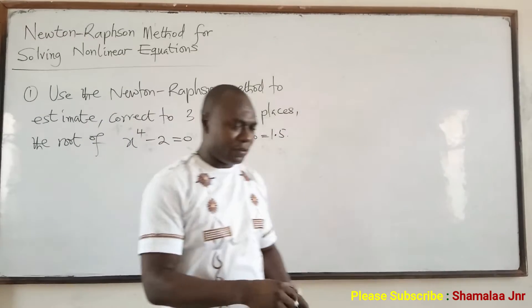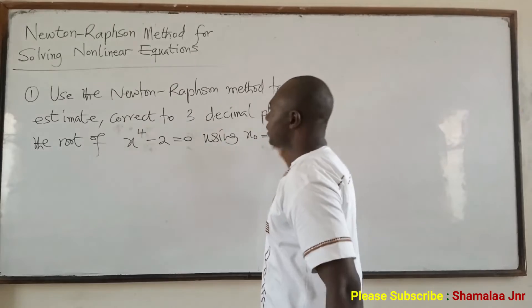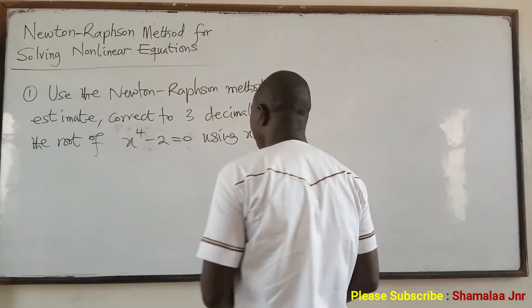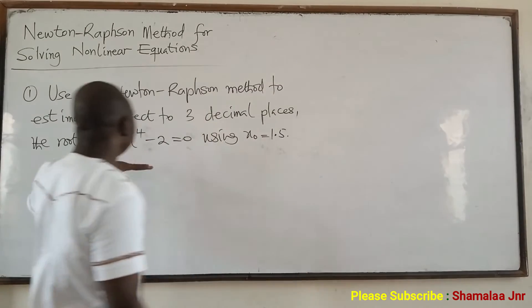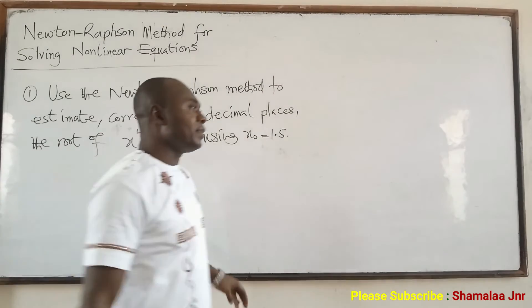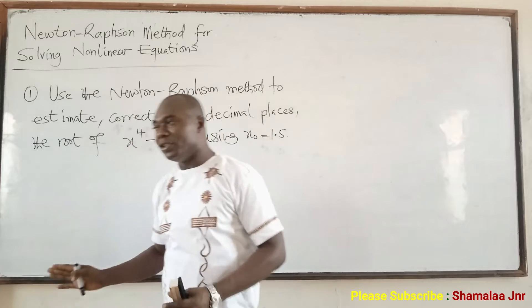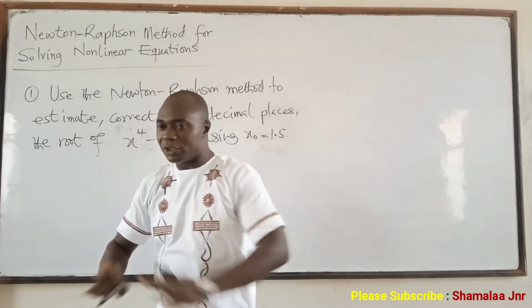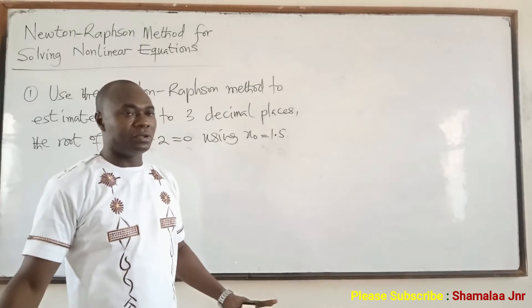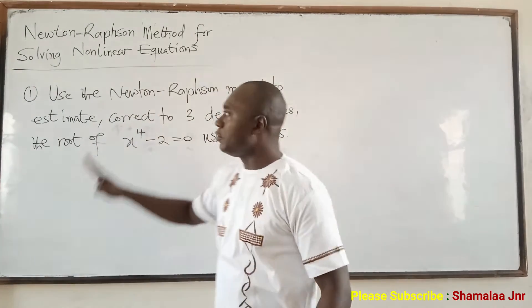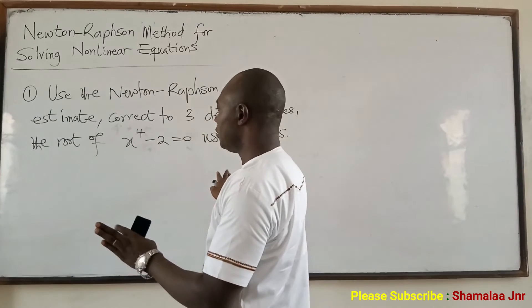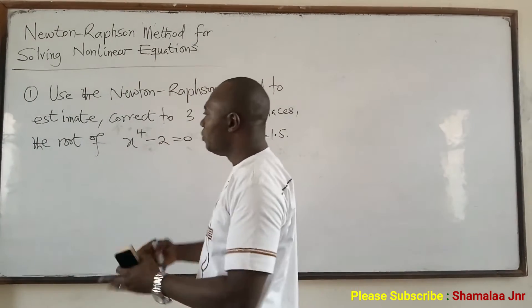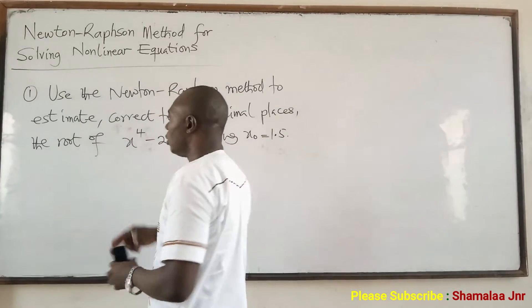Let me explain the question. I've been asked to use the Newton-Raphson method — you can simply say Newton's method — to estimate the root. We are going to estimate the root. What this means is that the answer you are going to get will not be an exact solution, but the answer will be very close to the actual solution, the exact solution. That is the essence of using numerical methods — you can't get an exact solution, but the answer will be very close, an approximate value of the solution. So it's natural that we are saying 'estimate'.